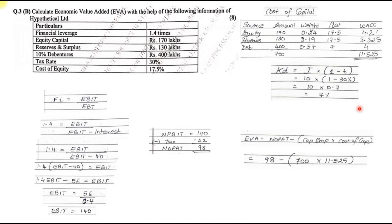Apply the EVA formula: EVA = NOPAT − (Capital Employed × Cost of Capital) = 98 − (700 × 11.525%) = 98 − 80.675 = 17.325 lakhs. Our EVA is positive, indicating it is a good investment. That concludes Question 3B on Economic Value Added. Questions 3A and 3B were both relatively straightforward under this paper.